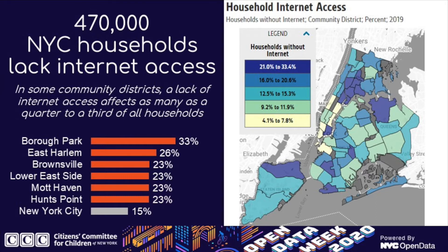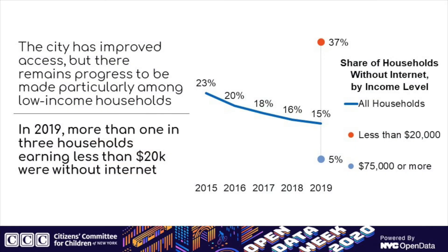Areas like Borough Park and Brownsville in Brooklyn, the Lower East Side and East Harlem in Manhattan, and South Bronx neighborhoods like Mott Haven and Hunts Point are particularly affected. The city has improved overall internet access — 15% lacked internet in 2019, down from 23% in 2015. But progress remains needed, especially among low-income households. In 2019, more than one in three households earning less than $20,000 annually were without internet, compared to just 5% of households earning $75,000 or more.